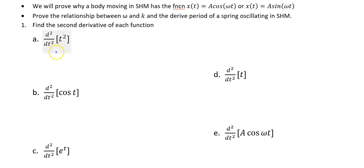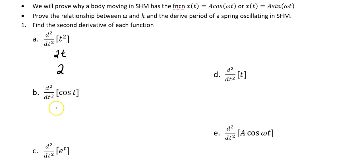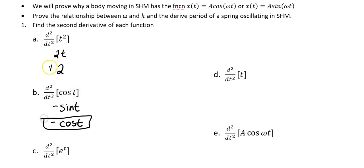The first derivative of (a) is just 2t. If I take the derivative once more, it's just going to be 2. The derivative of cosine is going to be negative sine of t. I take the derivative once more — negative cosine of t is the second derivative.